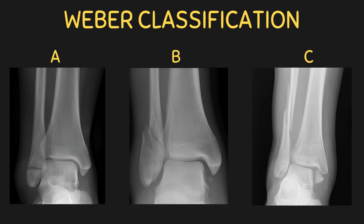There are three types of Weber fractures: Weber A, Weber B, and Weber C. You can see different examples of each Weber fracture on your screen. Before we take an in-depth look at these fractures, let's have a quick look at the normal ankle anatomy and the structures involved when talking about the Weber classification.